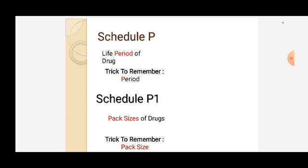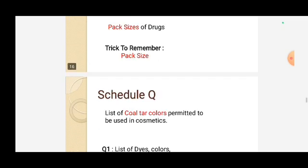Schedule P — the trick is 'Period.' Schedule P is the life period of a drug. Schedule P1 covers pack sizes of a drug, with the trick word 'Pack Size.' Both fall under the name P, making them easy to remember together.